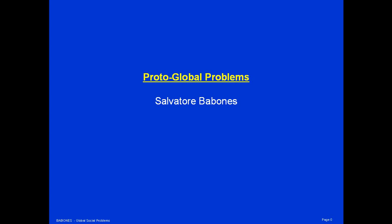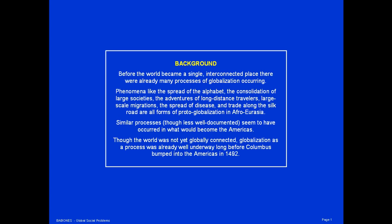I'm Salvatore Babonis and today's lecture is Proto-Global Problems. Before the world became a single interconnected place, there were already many processes of globalization occurring. Phenomena like the spread of the alphabet, the consolidation of large societies, the spread of disease, and trade were all forms of proto-globalization occurring throughout the Afro-Eurasian continent.